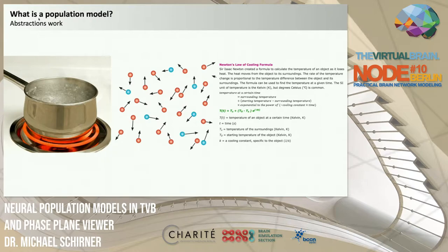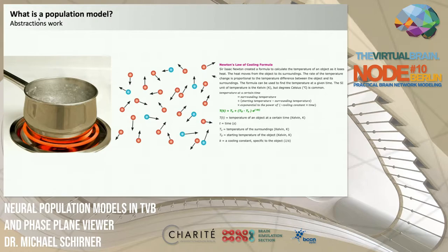A very simple formula depending on very few parameters and variables can give us an estimate of the macroscopic quantity — temperature — which depends on the average behavior of all individual molecules, not the specific settings of each one. We do something similar when simulating brains.